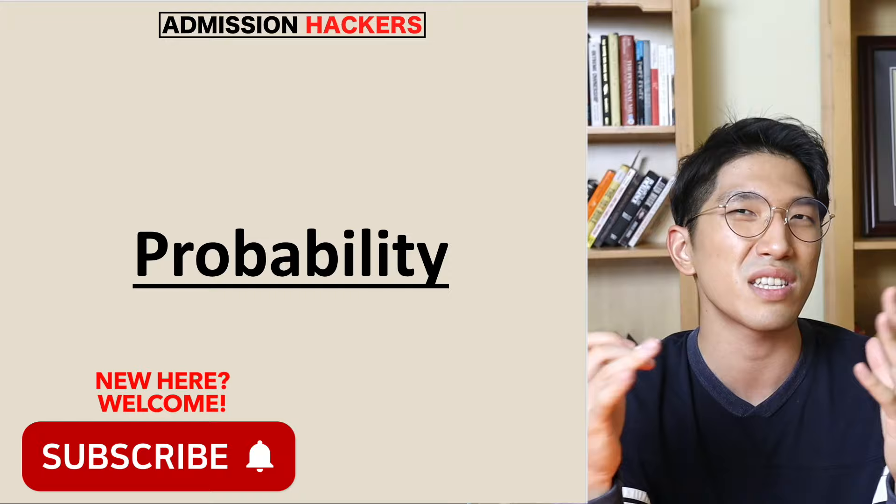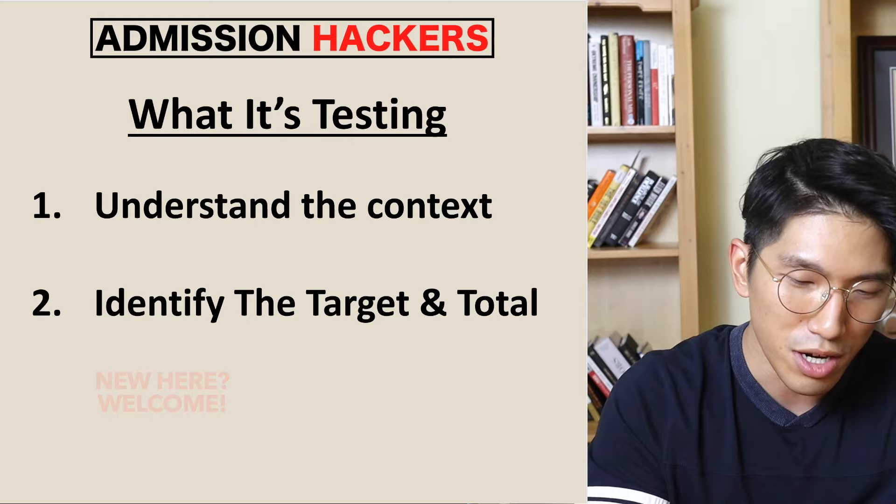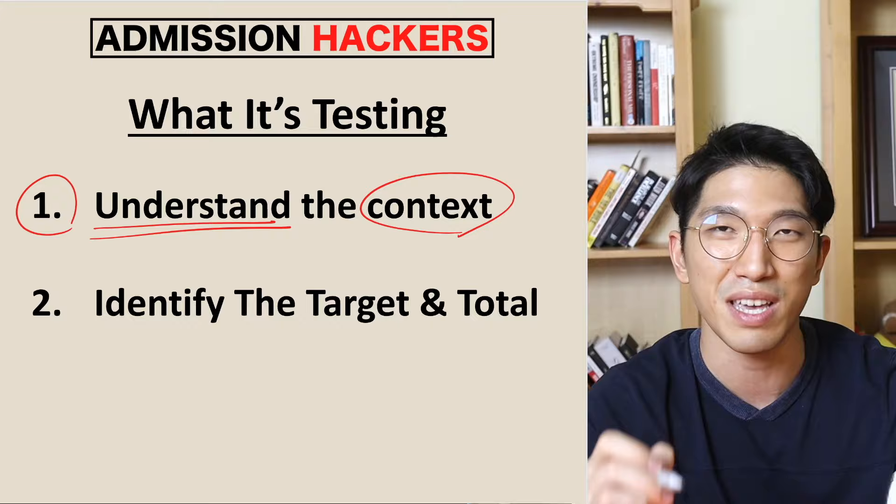So make sure you stick till the end and master the two things to look for on these probability questions. So what are the two things that you need to know? You need to understand exactly what they're testing you on first — your ability to understand the context in which the probability question is given.